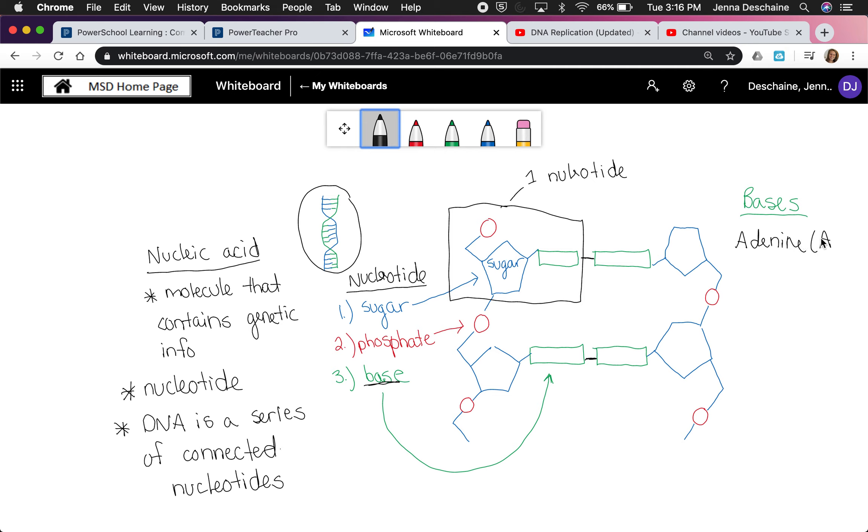The four different bases are named adenine, A for short, thymine, T for short, guanine, G for short, and cytosine, or C for short. So these are the four different kinds of bases that you can find within DNA. And depending on the order of these bases, that determines what you look like and what makes your DNA unique from someone else's DNA.